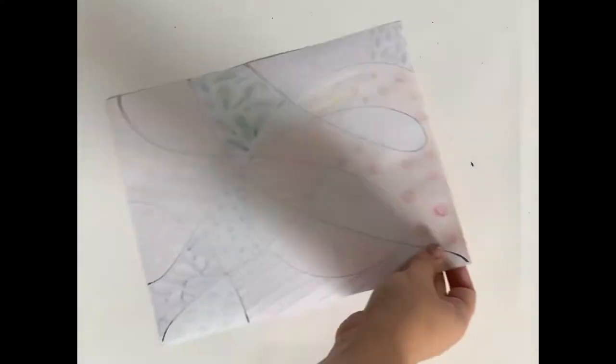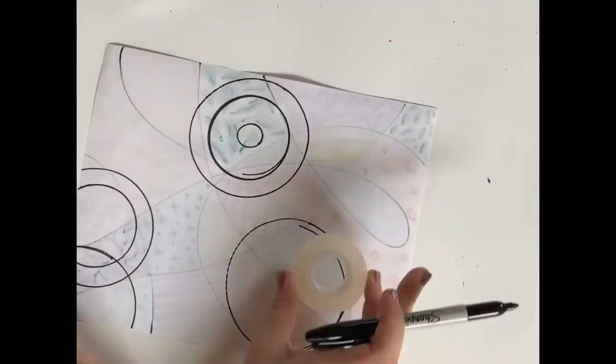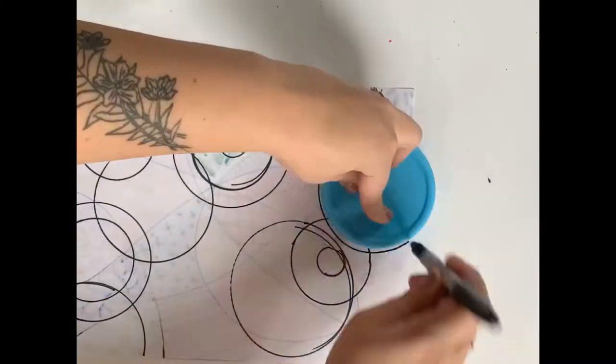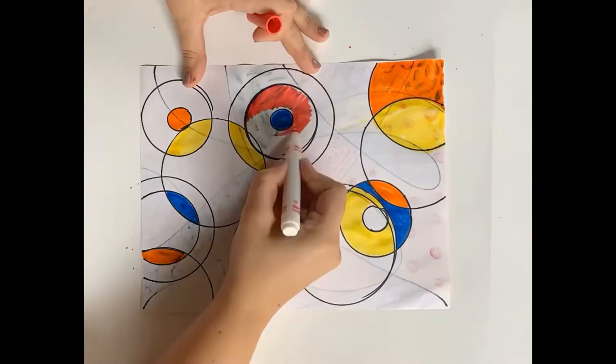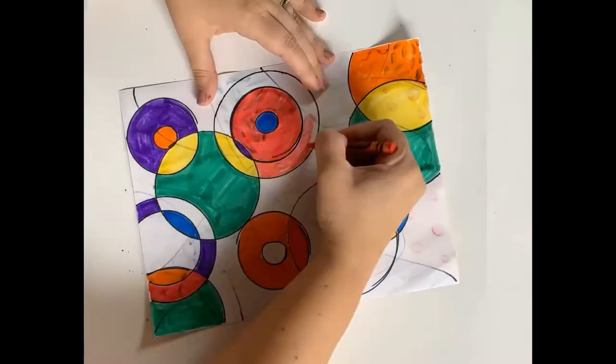Next, we're going to flip our paper over. Trace a few different round objects in overlapping circles and semicircles like Stella's protractor series. Then add lots of color.